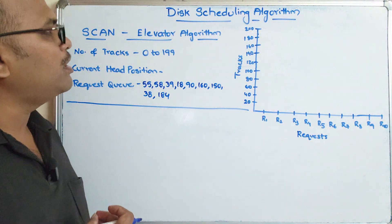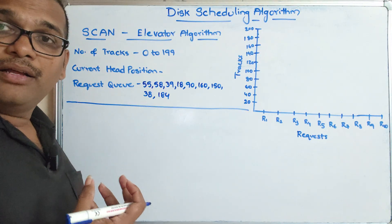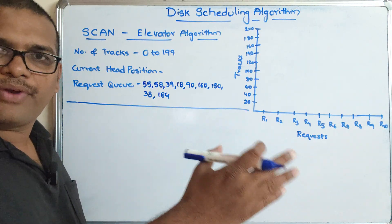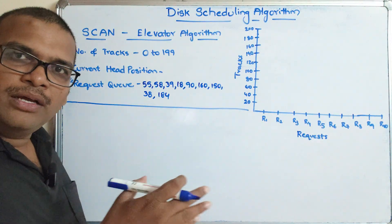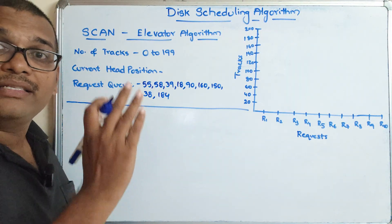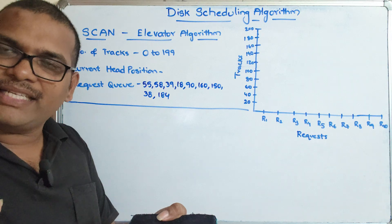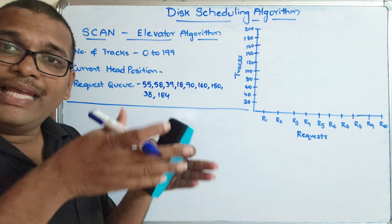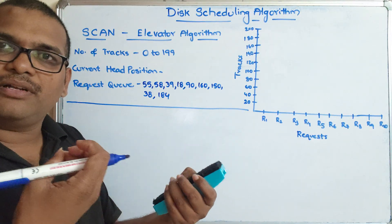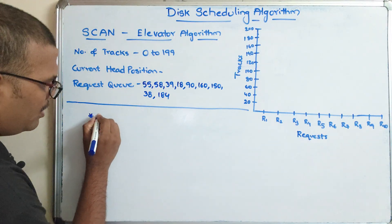Similar to those, we will see one more disk scheduling algorithm: the SCAN scheduling algorithm, which is also known as the elevator algorithm. Here the read/write head will keep moving in one direction, and once it reaches the highest track number it will travel backward. It will process requests during this movement, moving in only one direction until it reaches the highest track number. In the disk there are concentric circles which we call tracks, and the track numbers start from the inner to the outer circle.